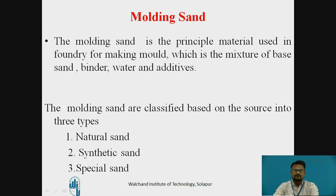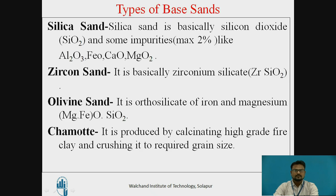There are three types of base sands. The first one is silica sand. Silica sand is basically silicon dioxide, SiO2, with some impurities of maximum 2%, such as Al2O3, FeO, CaO, and MgO2. It is available naturally in river beds, sea, and desert. This type of sand is widely used because of its easy availability.